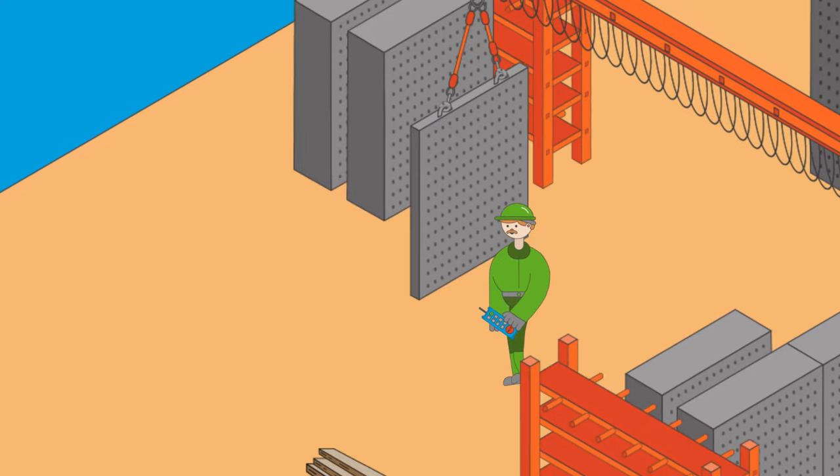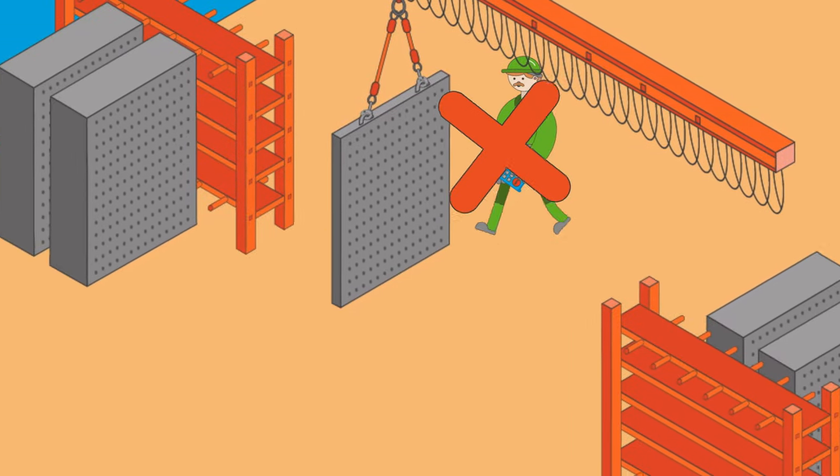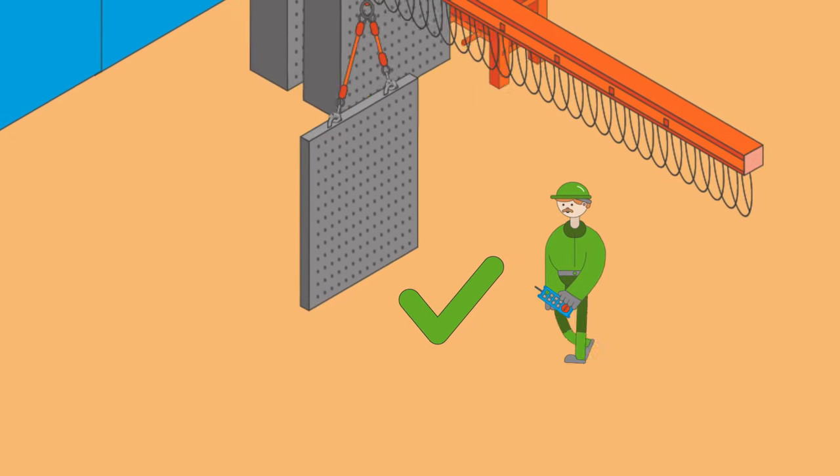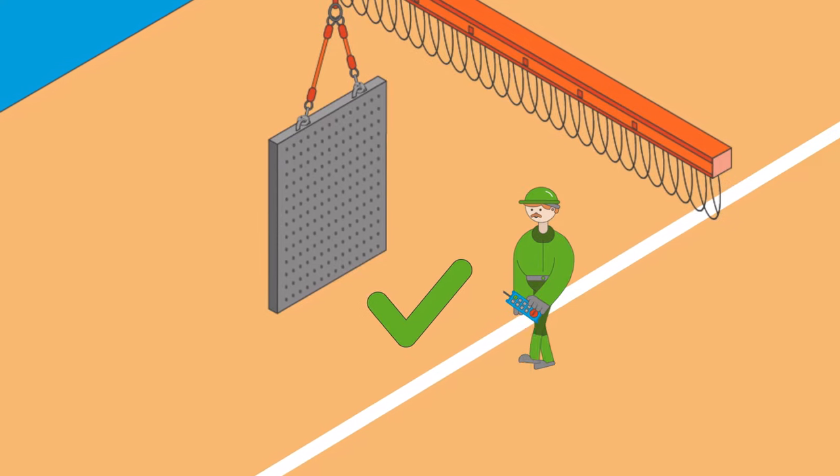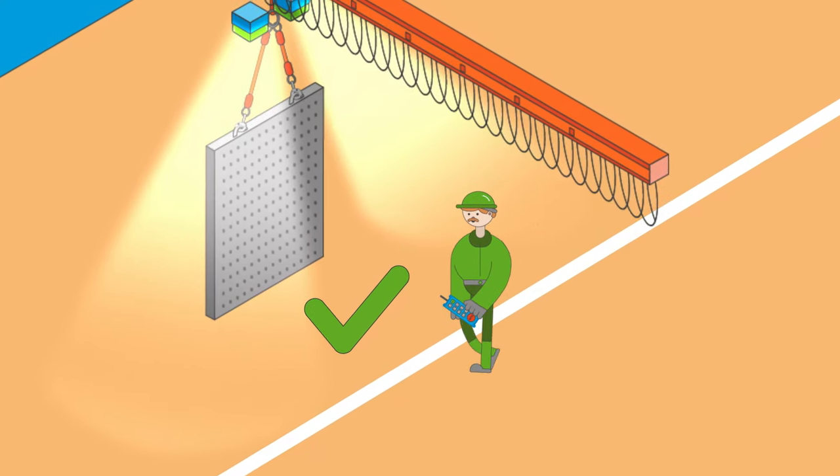Make sure that in the event of an accident, employees aren't in the hazard zone and cannot be struck by the load. Lifting zones and hazard zones should be clearly demarcated. The crane should also be equipped with warning lights and sounds.